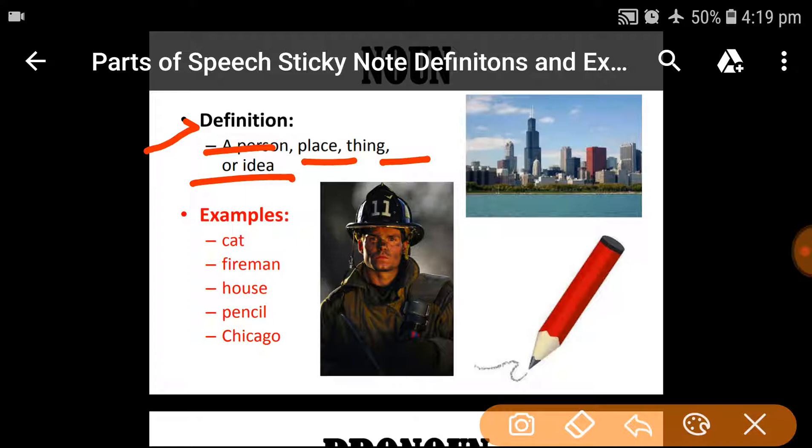You can see here three examples. This is a person, this one is a place and this one is a thing. So now, see the example: cat, fireman, house, pencil, Chicago. These are some nouns.